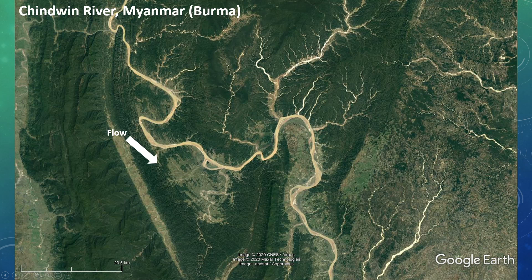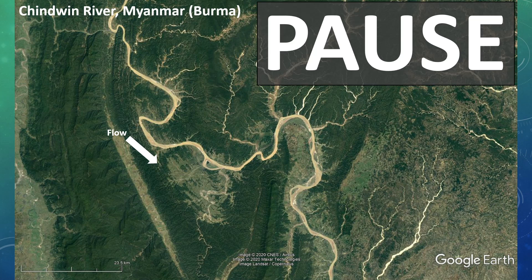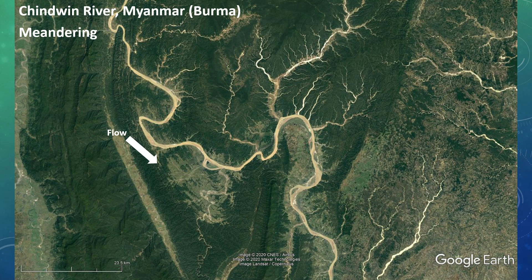And finally, we have the Chindwin River in Myanmar, or Burma. Did you guess meandering river? Great work. Notice these big sweeping bends of the river. Point bars are also present, although it's a little bit tougher to see given the water color. But all in all, this is a pretty clear meandering river system.